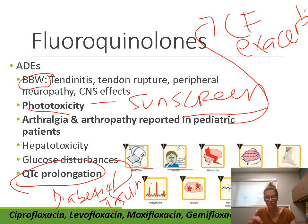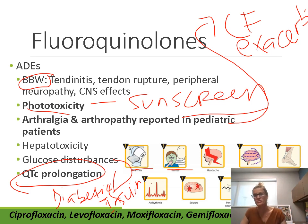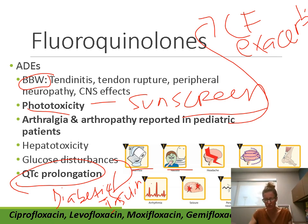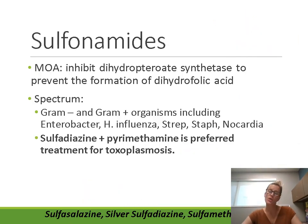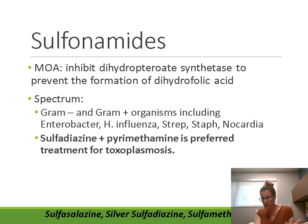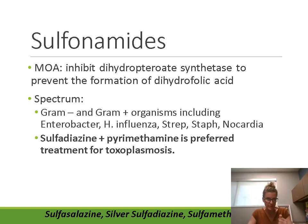Electrolyte levels, such as potassium, can also make QT prolongation more likely. Always check if your patient is on antiarrhythmics or other QT-prolonging agents, and avoid fluoroquinolones when possible in those patients. In summary for fluoroquinolones: think Cipro and Levo for UTIs, Levo and Moxi for respiratory infections, and Cipro for anthrax.